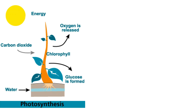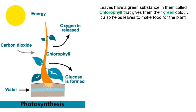Leaves have a green substance in them called chlorophyll and that gives them their green color. Chlorophyll also helps leaves to make food for the plant. Now, do you want to know how it does that?